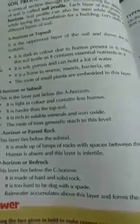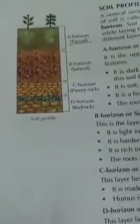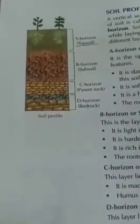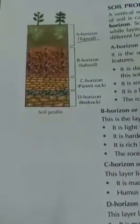Organisms like earthworms, insects and bacteria live in the A horizon layer. The roots of small plants are found in this topsoil layer. The roots of big trees reach down to B horizon.